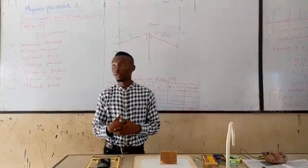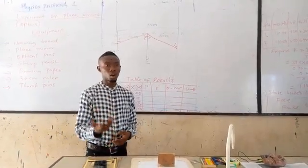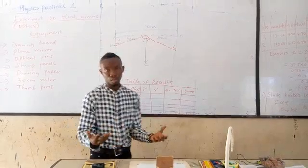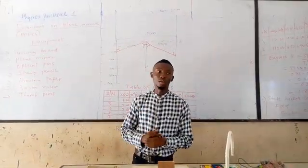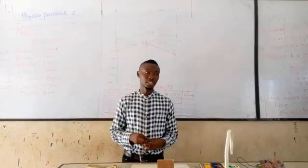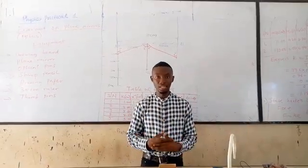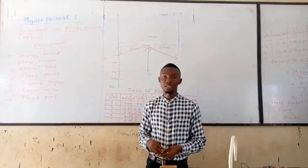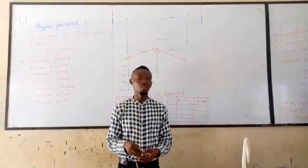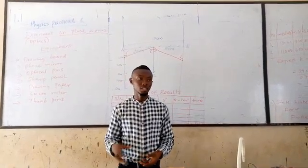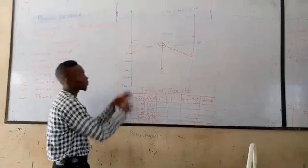We are going to conduct experiments based on the laws of reflection. The laws of reflection states that the angle of incidence, the reflected angle, and the normal all lie in the same plane. And the refractive index is equal to the sine of the incident angle all over the sine of the refractive angle. So we are going to do that experimentally.